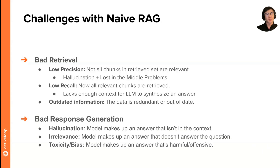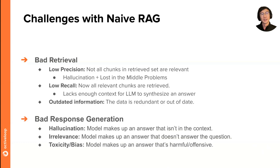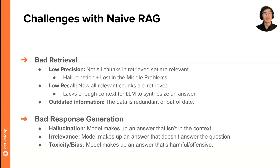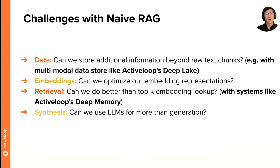Another component is bad response generation. Even if the retrieved results from the vector database are good, your model is still susceptible to different types of issues. The LLM could hallucinate — making up an answer that's not actually in the returned context and choosing to ignore it completely. There's also irrelevance, where the model makes up an answer that doesn't actually answer the question but may be grounded in the context. And of course, there are issues like toxicity, bias, guideline adherence, and structured outputs — for instance, sometimes you want JSON output but the model can't generate it.